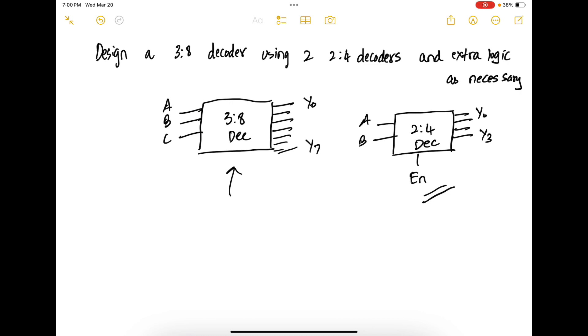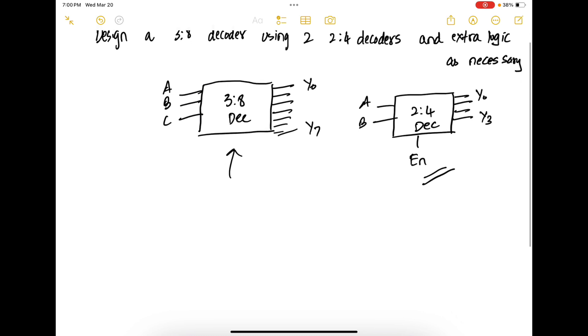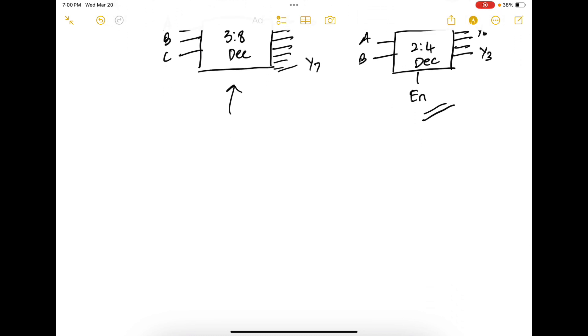The first step is draw the truth table for the 3-to-8 decoder. So you have inputs A, B, C, Y7, Y6, Y5, Y4, Y3, Y2, Y1 and Y0.